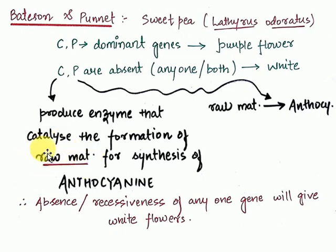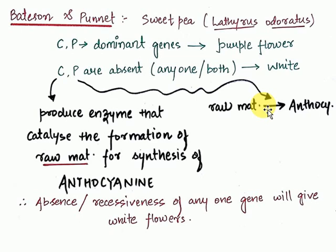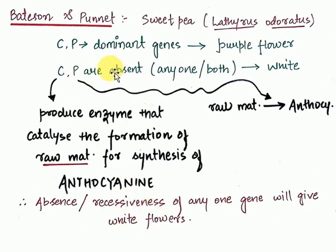The gene P synthesizes another enzyme that converts the raw material synthesized by gene C into anthocyanin. For the production of anthocyanin, both things are needed — the raw material and the enzyme to convert it. If there is no raw material, then P has no role because there is no substrate for this enzyme to act on. So both genes must express to form anthocyanin.